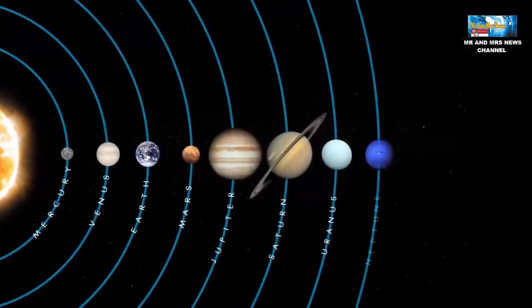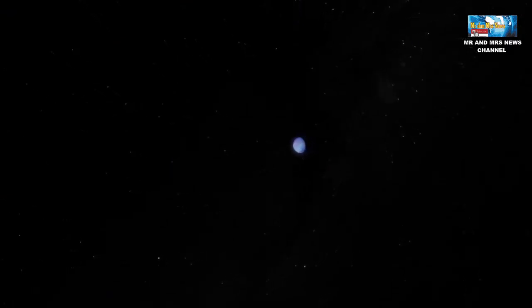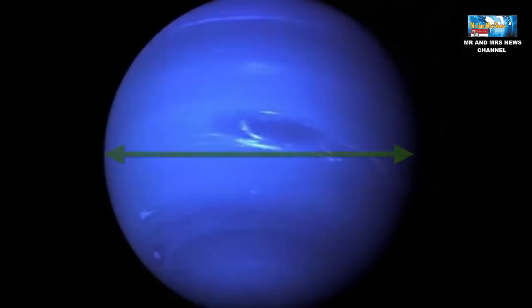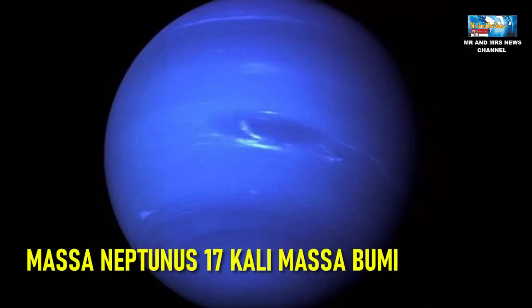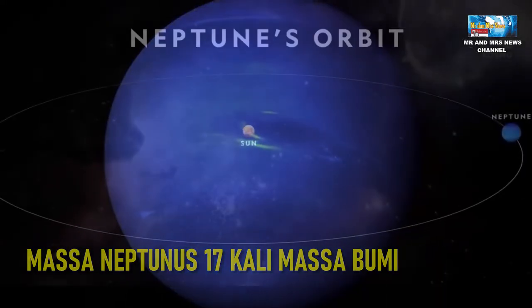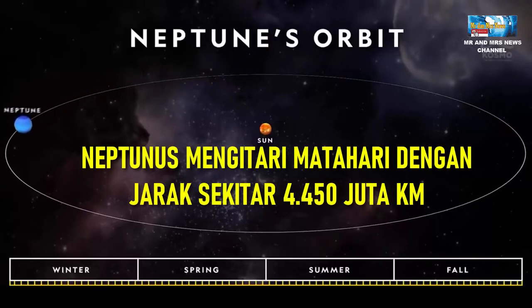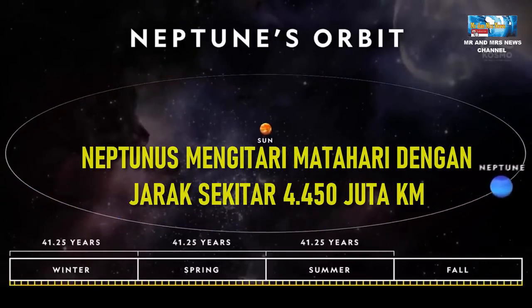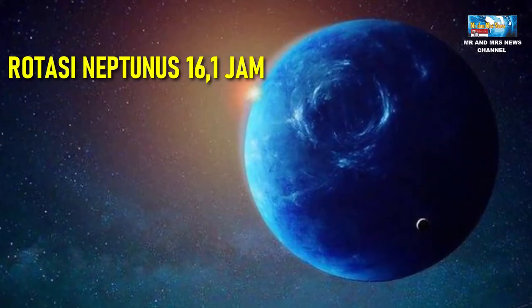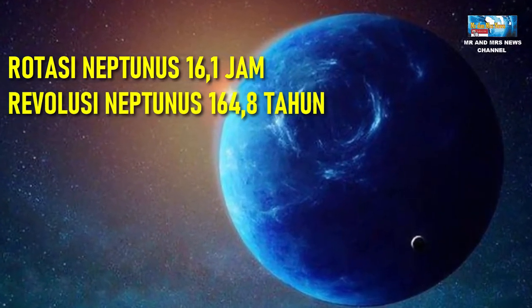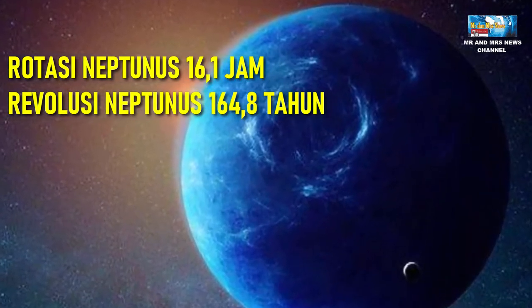Neptunus is the planet farthest from the sun. This planet is named after the Roman sea god. Neptunus is the 4th largest planet by diameter at 49,530 kilometers and 3rd by mass. Neptunus's mass is 17 times bigger than Bumi. Neptunus is about 4,450,000,000 kilometers from the sun. Its rotation period is 16.1 hours, while its revolution period is 164.8 years.